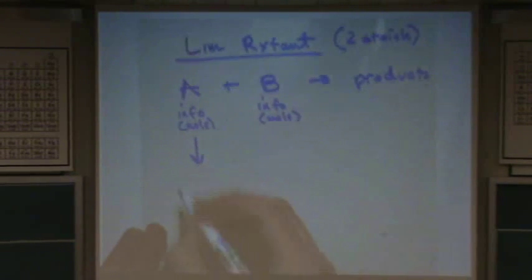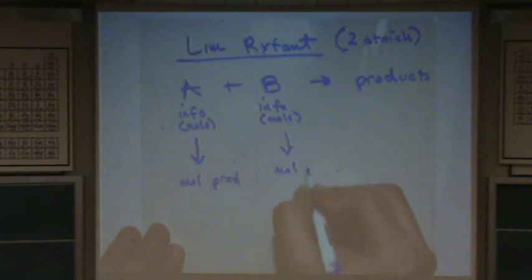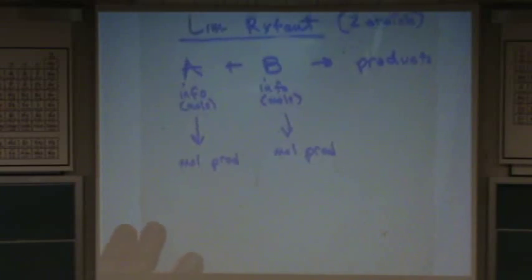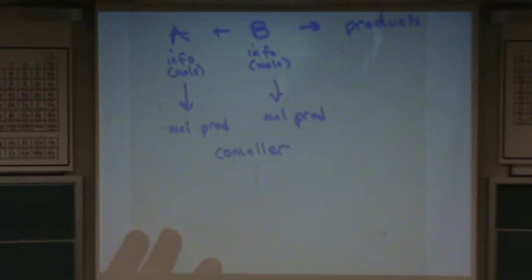You change this to moles of the product of interest, and you change this to moles of the product of interest. After you do that, you pick the smaller one. The smaller numerical value leads back to your limiting reactant.